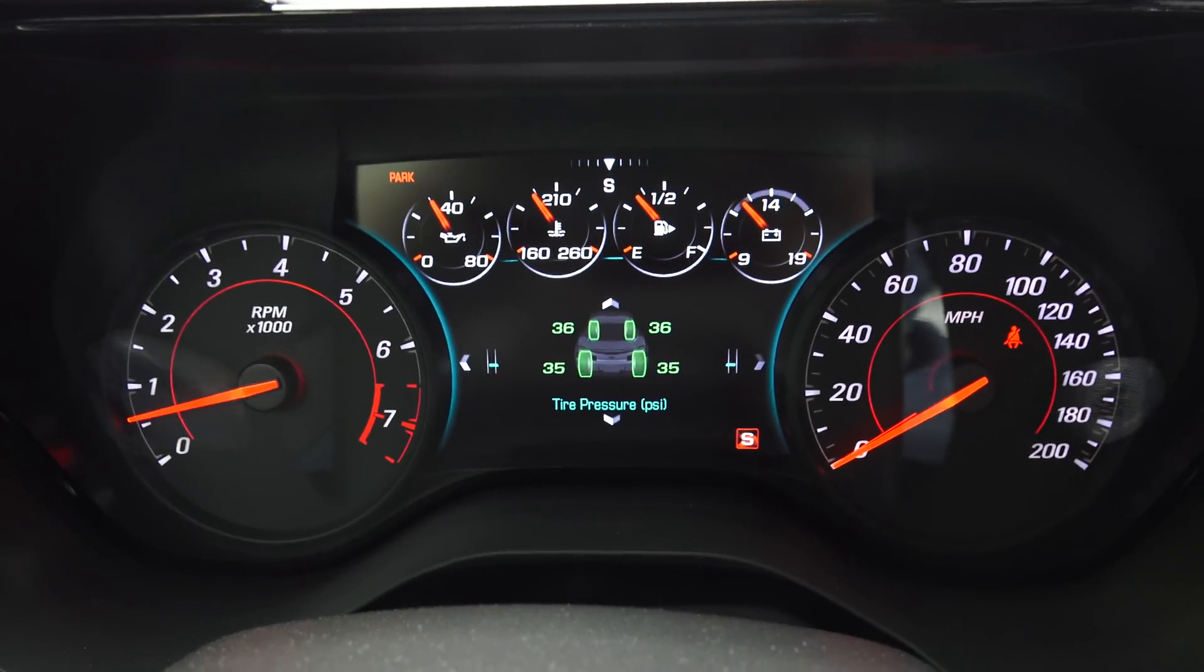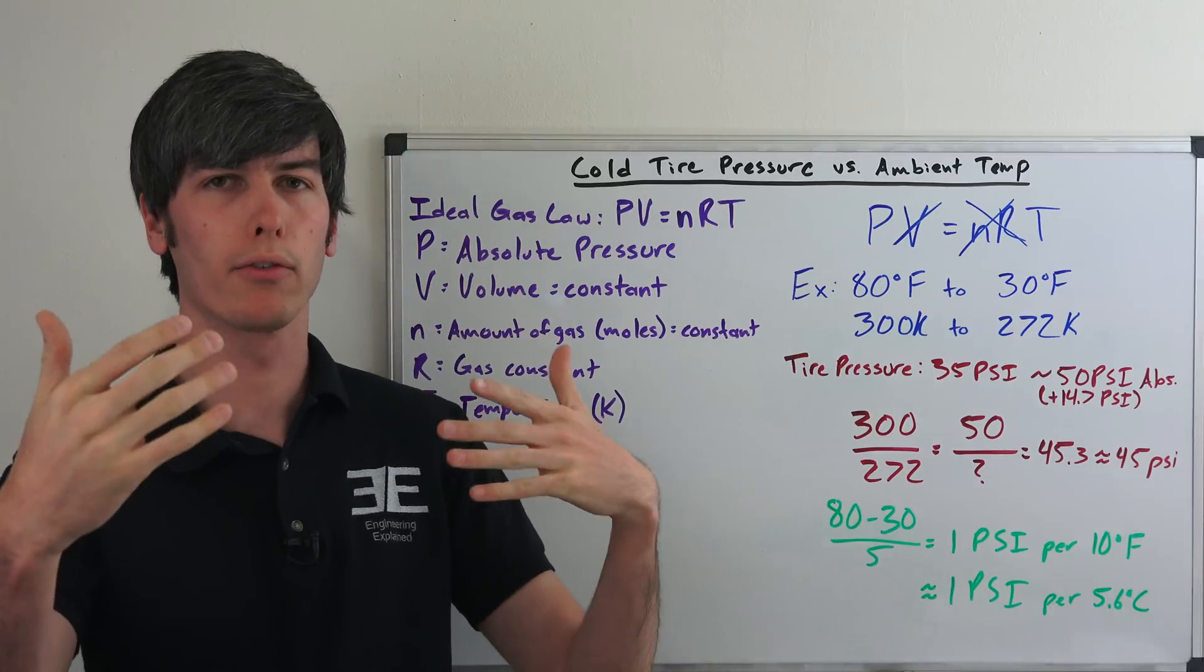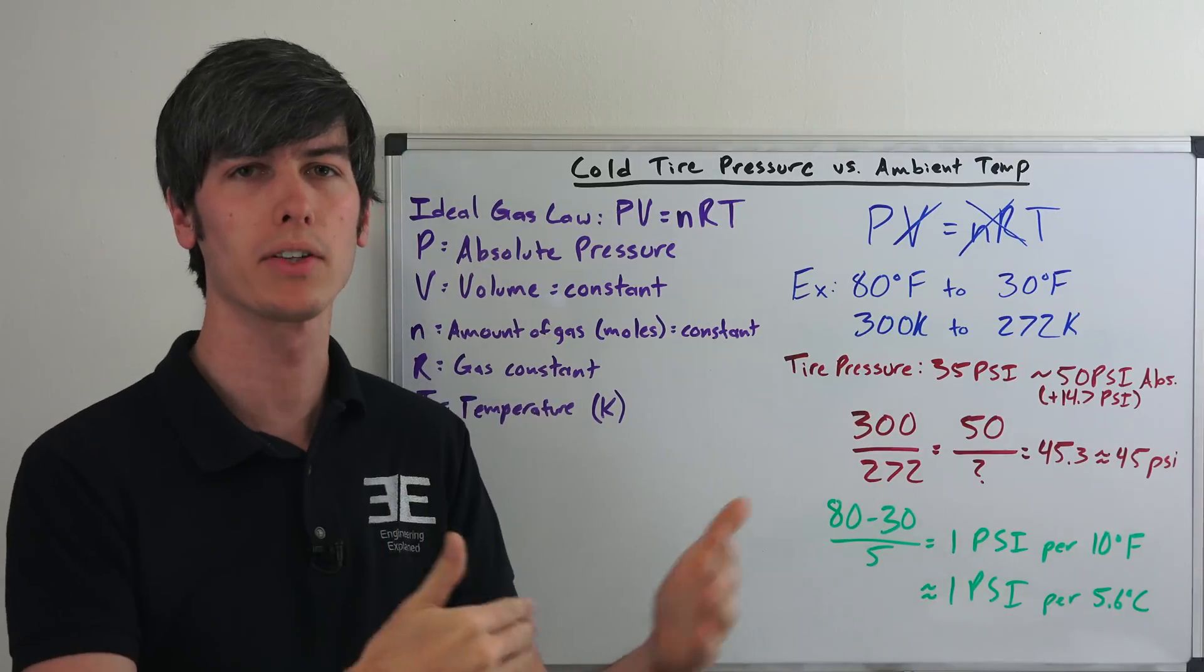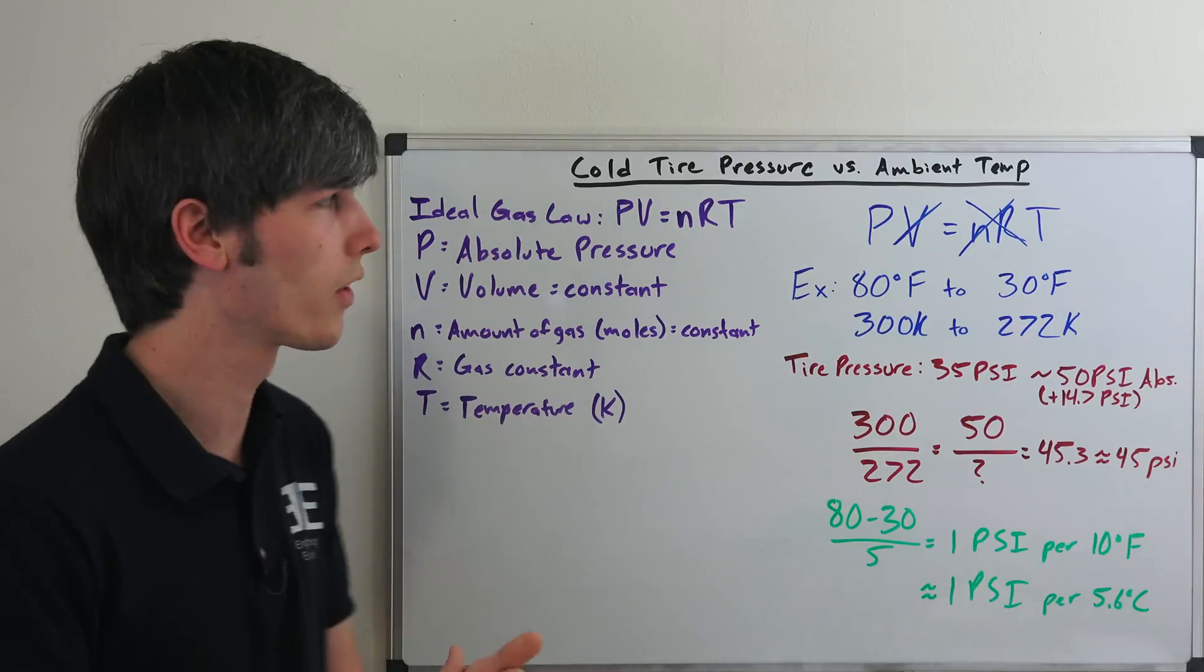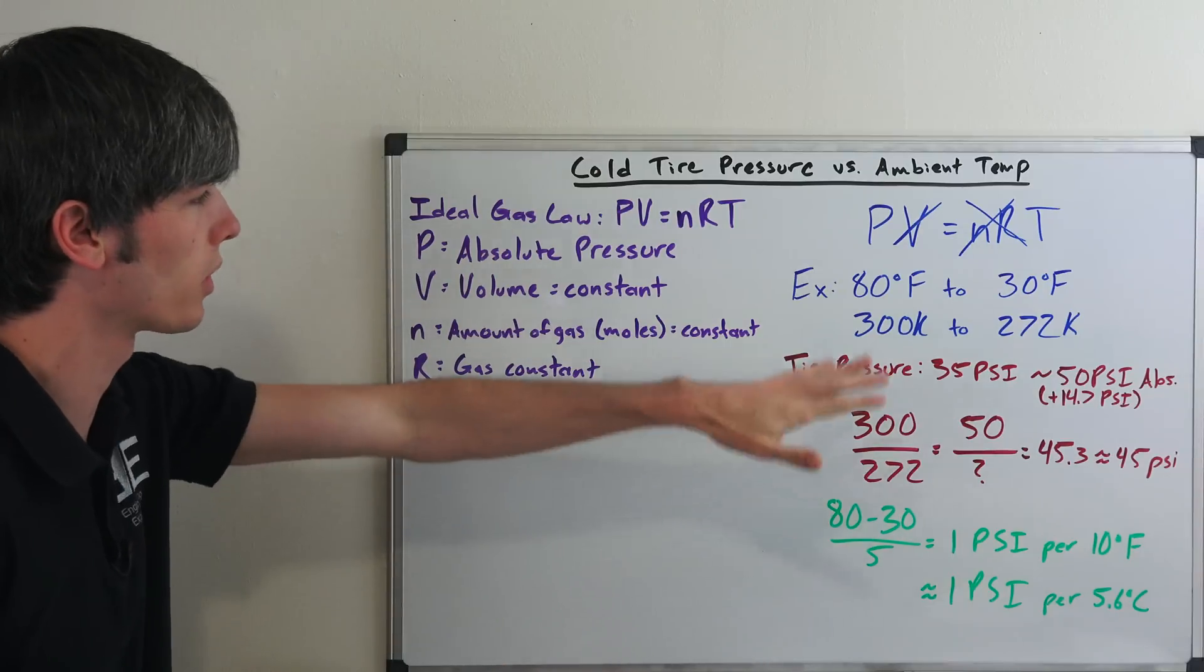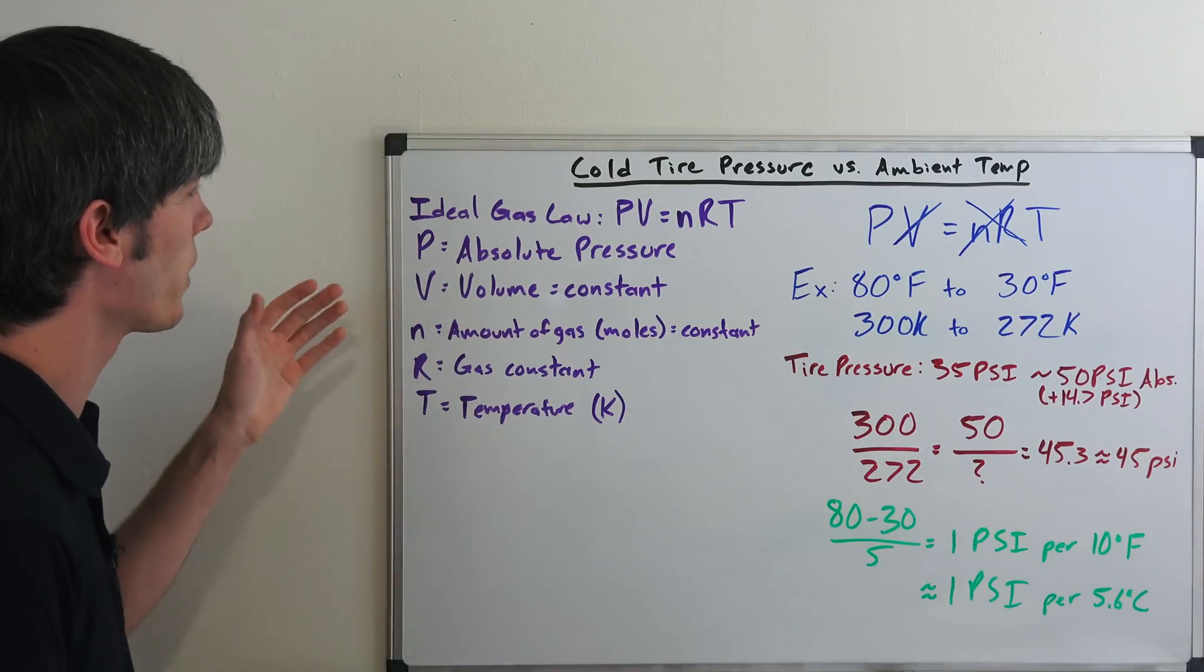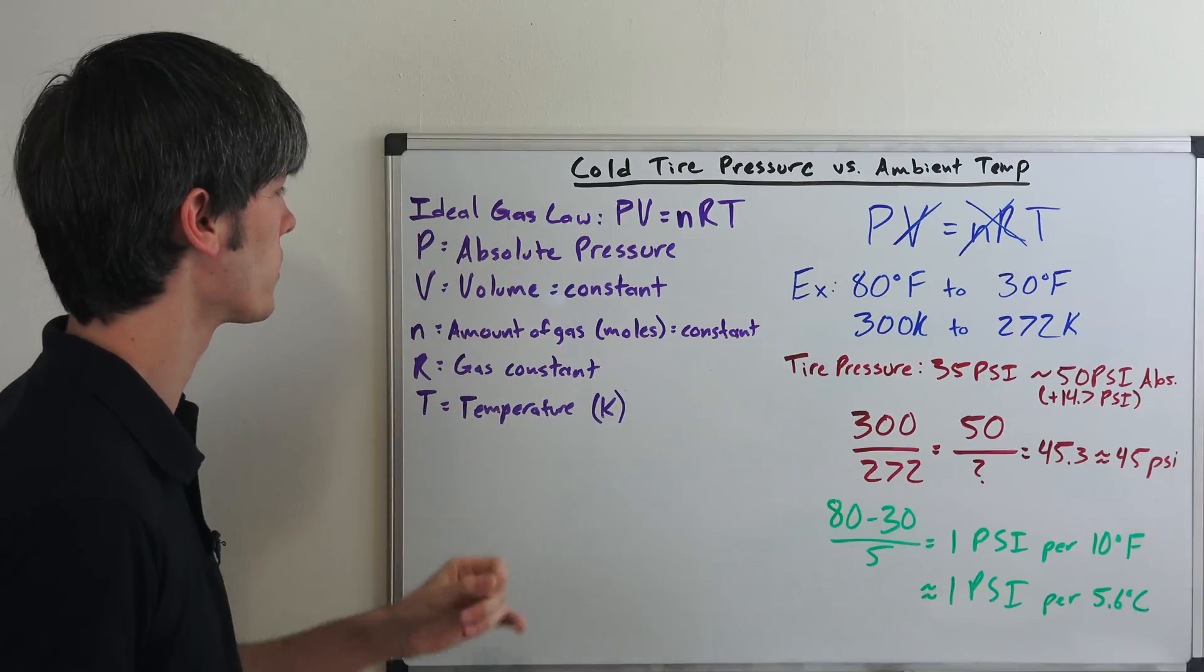So, our first question: how does tire pressure change with temperature? And you may have heard a rule of thumb, where every 10 degrees of Fahrenheit change of ambient temperature, you'll have 1 psi of change in your tire pressure. So, where does this come from? Well, it all comes from the ideal gas law, and it's a very simple equation that we can work out to prove this fact. So, we have PV equals NRT.